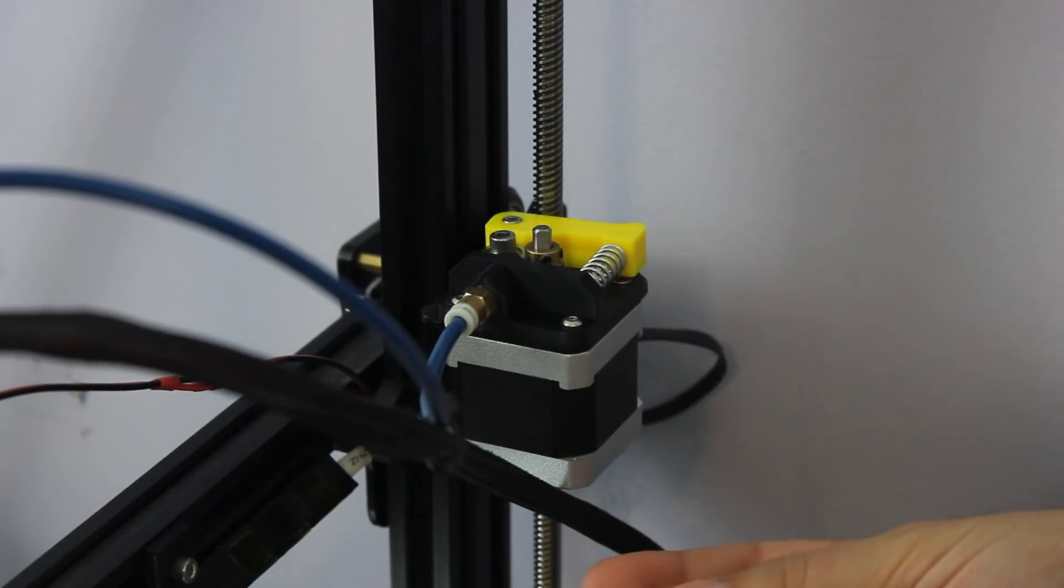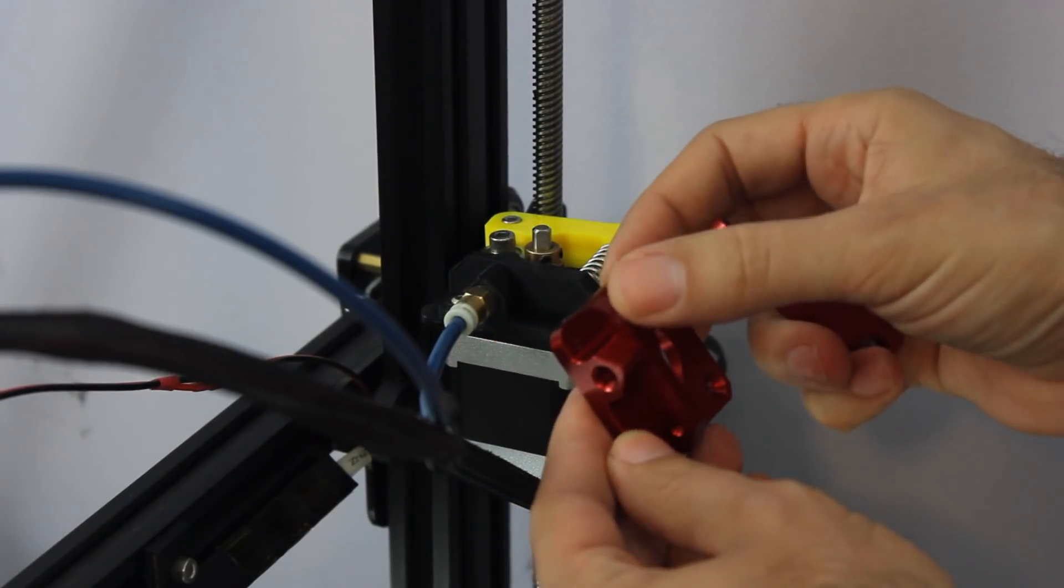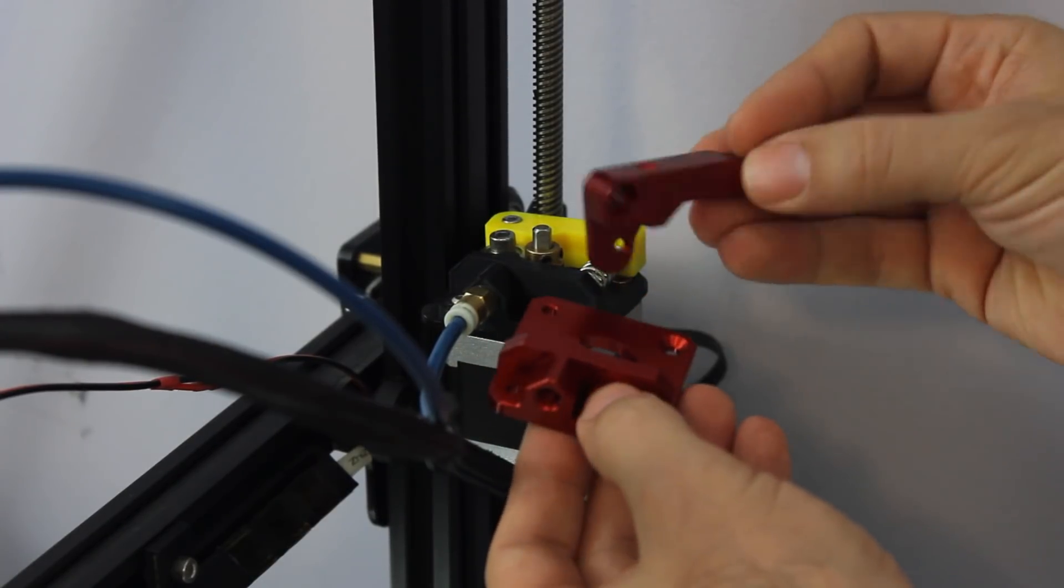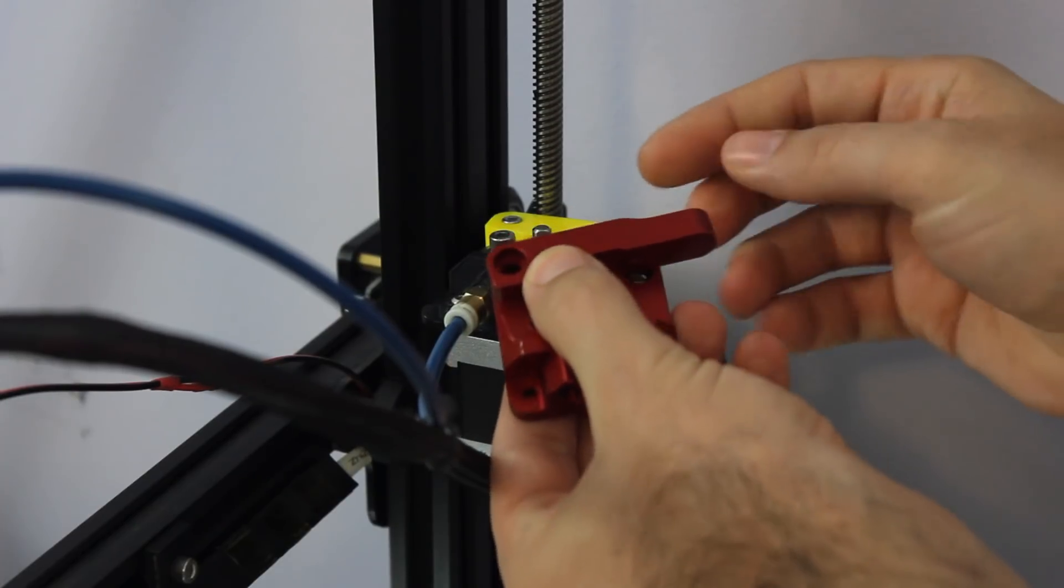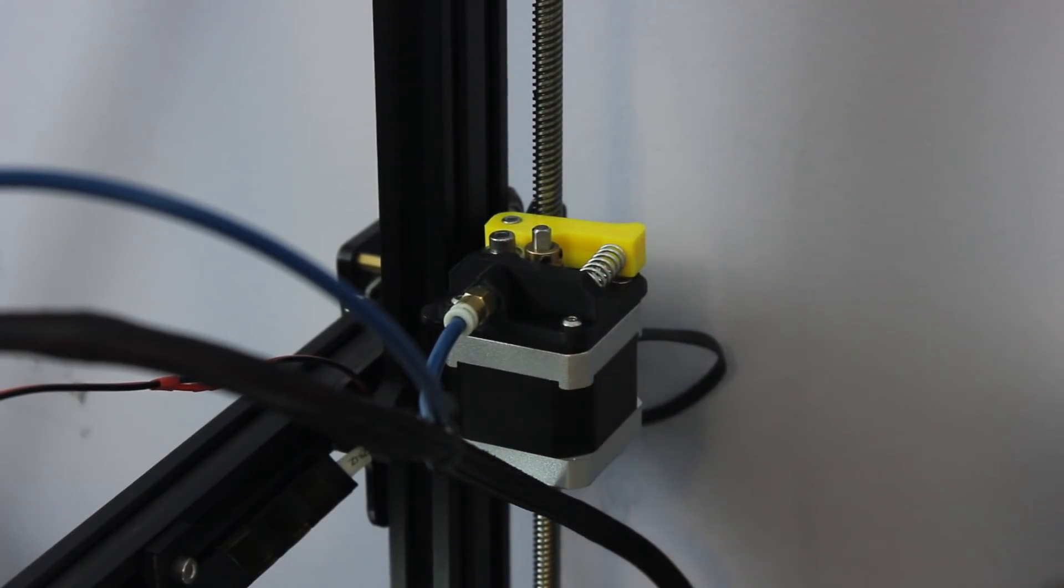So in the bag what you get is the metal piece here, and this one's a little scratched up, but that's all right. And you get this arm here, and it is kind of nice because this arm is longer, so you can get a little bit more grip on it.